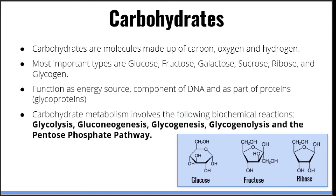We will start our discussion of biomolecules with carbohydrates. Carbohydrates are molecules which are made up of carbon, oxygen, and hydrogen atoms. There are hundreds of different carbohydrates. However, the types which are relevant for Step 1 are glucose, fructose, sucrose, ribose, and glycogen. Glucose is the most abundant carbohydrate monomer in the human body and is also its primary source of energy. Fructose is another carbohydrate monomer, found in foods such as fruits and plants. Galactose is another type of carbohydrate monomer which is commonly found in foods such as dairy and plants.